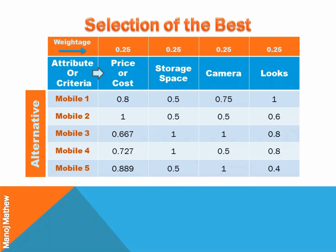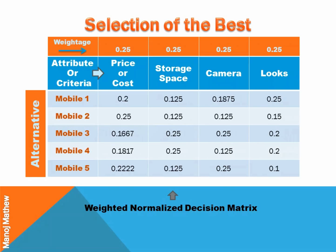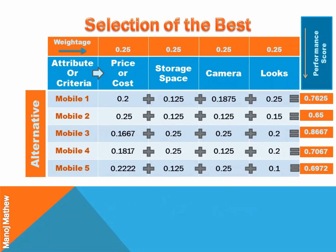Convert the percentage into a number and then multiply the weightage assigned to each criteria with its normalized performance value. On solving, we get the weighted normalized decision matrix. Next, we add all weighted normalized performance values of each alternative to get a performance score. For example, adding 0.2, 0.125, 0.1875, and 0.25, we get a performance score of mobile 1 as 0.7625.